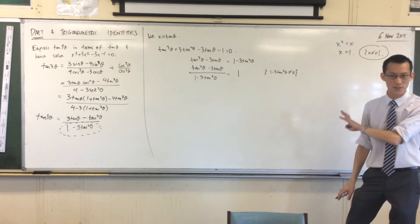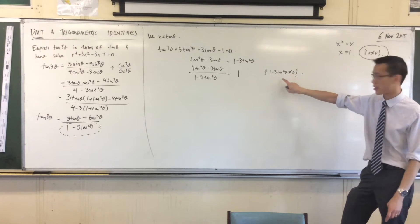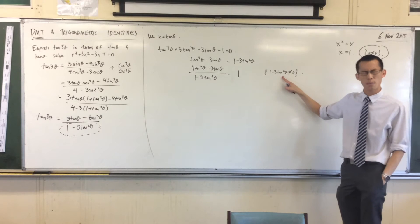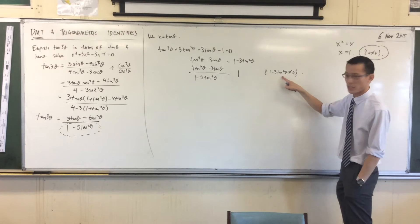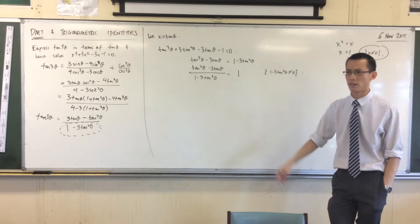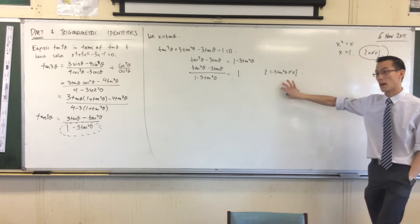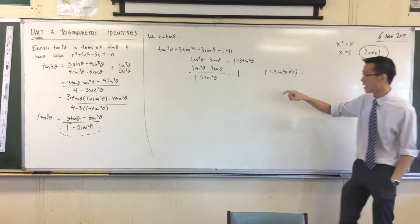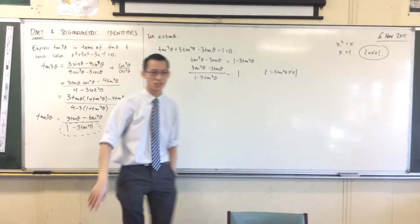So what I've said at this point here is 1 minus 3 tan squared theta can't equal to zero. So I'm not going to do it now for the sake of time, but you'd have to go and check. This is tan theta equals plus or minus 1 on root 3, which is pi on six. Plus or minus pi on six. So you'd check those. But I'm just drawing your attention to it.